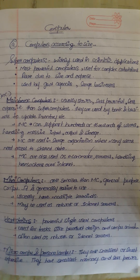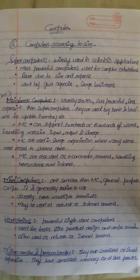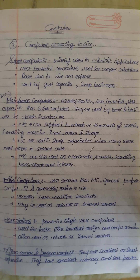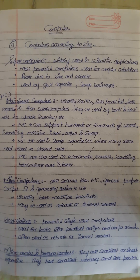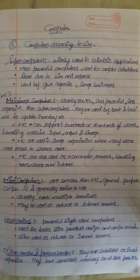Then come mainframe computers. They are usually slower, less powerful, and less expensive than supercomputers. They are used by banks and businesses to update inventory. Mainframe computers can support hundreds or thousands of users handling massive input, output, and storage. They are used in large organizations where many users need access to shared data, and also as e-commerce servers handling transactions over the internet.